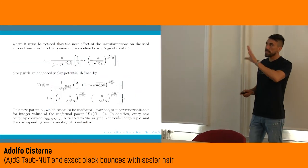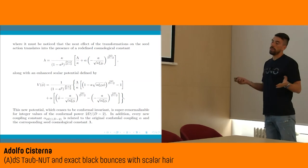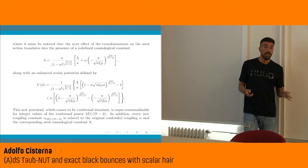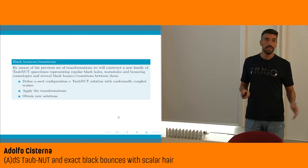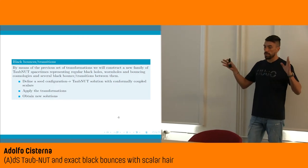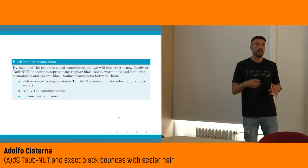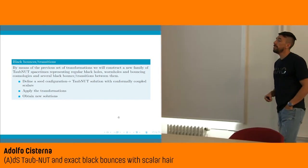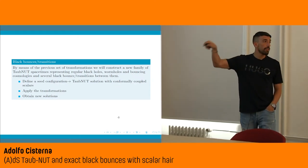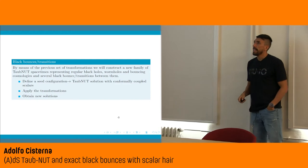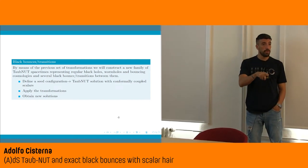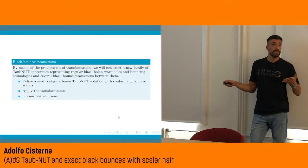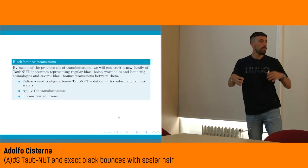Up to here I showed only static, spherically symmetric black holes with scalar hair. But our aim from the very beginning was to describe the so-called black bounce transition — regular black holes that transit between configurations that are wormholes and bouncing cosmologies. What we are going to show is that by applying the transformations on a Taub-NUT spacetime — so not spherically symmetric or static anymore — the solutions obtained are precisely of the type we are looking for: black bounces representing regular black holes, wormholes, and bouncing cosmologies.